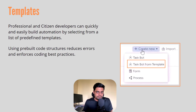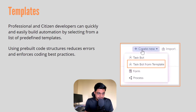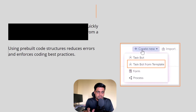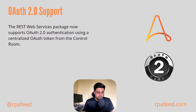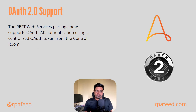You can use that template so that's how the templates feature will help you in building your automations. Next is OAuth 2.0 support — the REST web service package now supports OAuth 2.0 authentication using a centralized OAuth token from the control room.